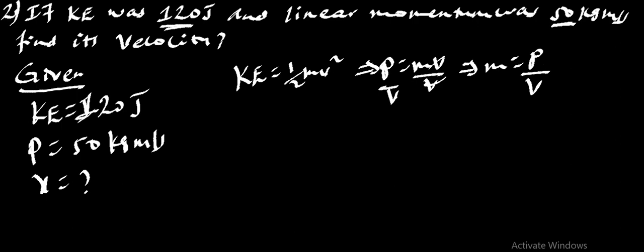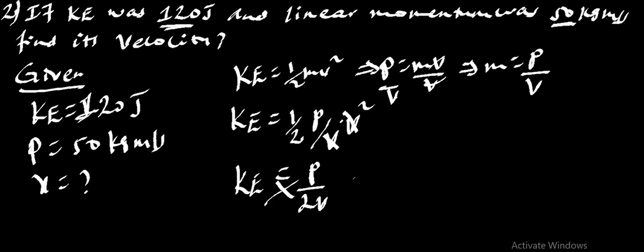So, instead of m, we can use P over V. Therefore, kinetic energy is equal to 1 over 2, P over V times V squared, 1 V by 1 V, which is P over 2 V is equal to kinetic energy. Therefore, V is P over 2 times kinetic energy.